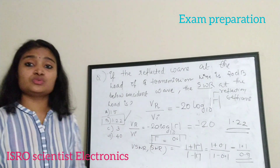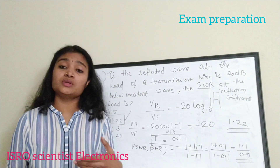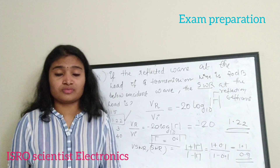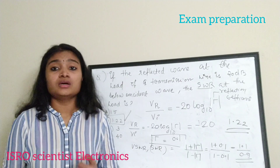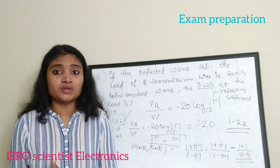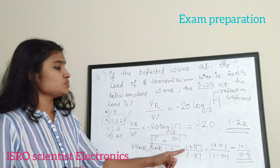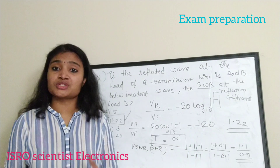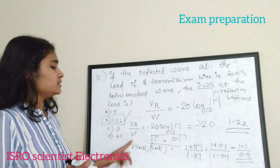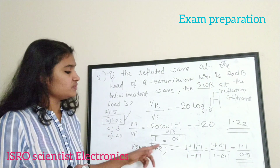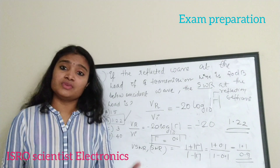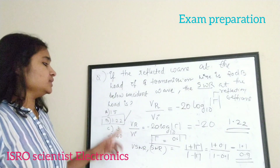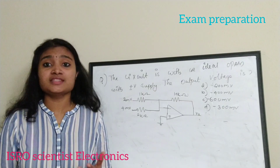So the correct answer for this question is option B, that is 1.22. To answer this question you just need to know the relation between SWR and the reflection coefficient: SWR = (1 + |Γ|) / (1 − |Γ|), where Γ is your reflection coefficient.